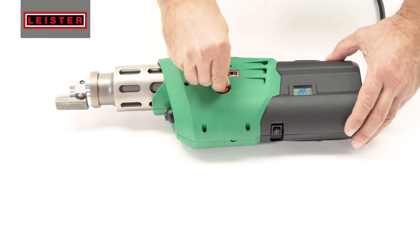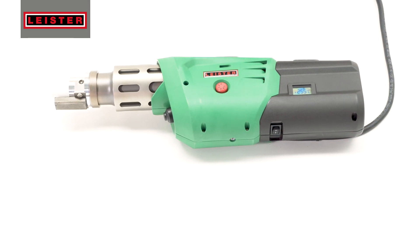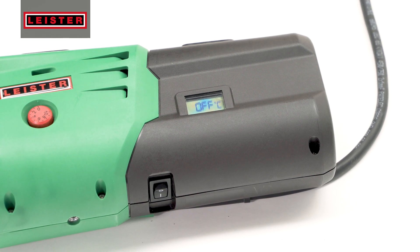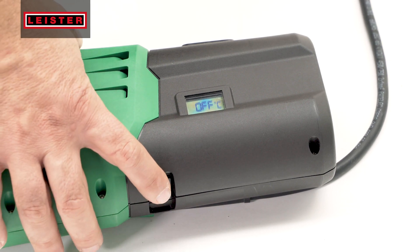Before turning off the power, turn the red temperature knob down to zero and let the gun cool down until display says OFF. Thank you for using the Leister Fusion One.